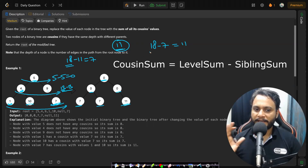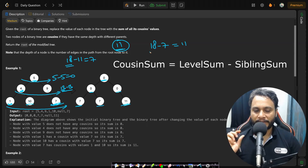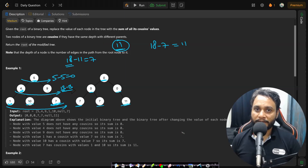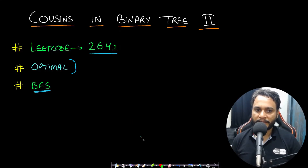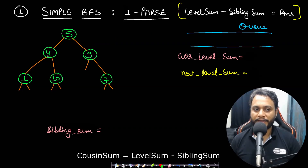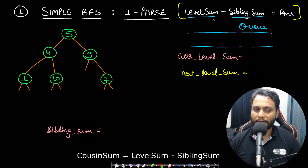The core idea of this problem is to maintain the sibling sum for each node and subtract the sibling sum from the level sum. You can also solve it with a two-pass approach, but we'll look at the most optimal one-pass BFS technique. The value for any node equals the level sum minus the sibling sum, because siblings cannot be cousins.